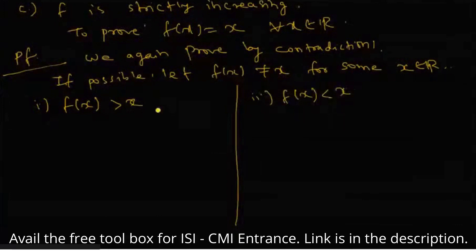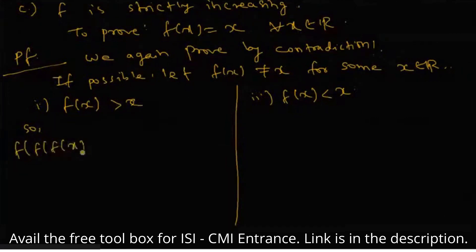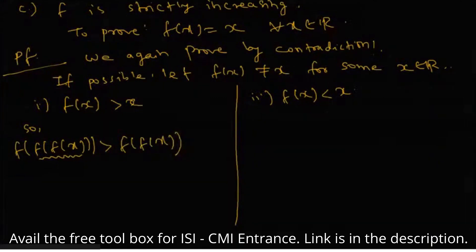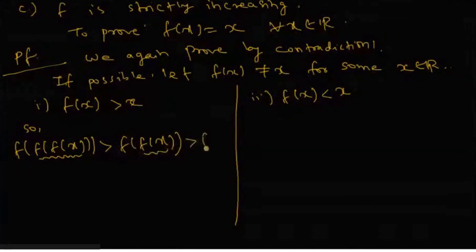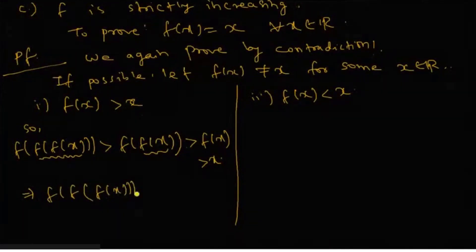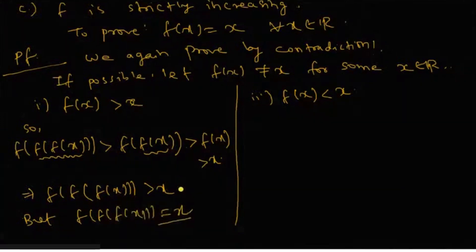In case one, let F(x) > x. Then since F is strictly increasing, F(F(x)) > F(x) > x, and F(F(F(x))) > F(F(x)) > x. This implies F(F(F(x))) > x. But F(F(F(x))) = x is given by the definition of the function — contradiction. So case one is not possible for any x belonging to real numbers.